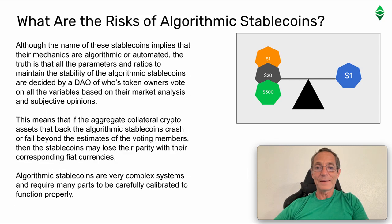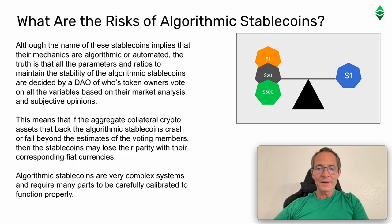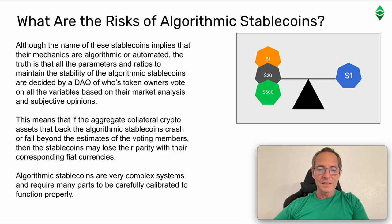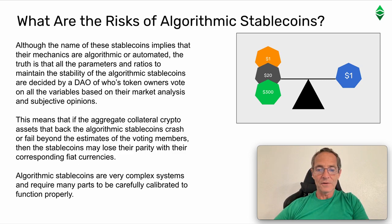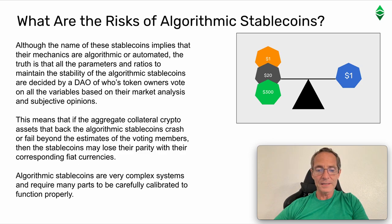What are the risks of algorithmic stablecoins? Although the name implies that their mechanics are algorithmic or automated, all the parameters and ratios to maintain stability are decided by a DAO whose token owners vote on all the variables based on their market analysis and subjective opinions. This means that if the aggregate collateral cryptoassets that back the algorithmic stablecoins crash or fail beyond the estimates of the voting members, then the stablecoins may lose their parity with their corresponding fiat currencies. Algorithmic stablecoins are very complex systems and require many parts to be carefully calibrated to function properly.